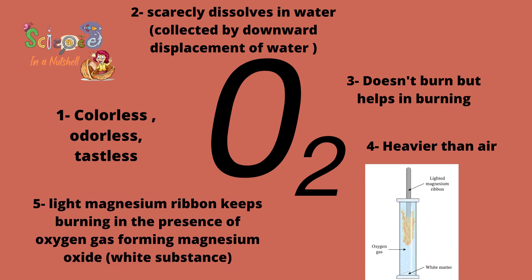Number 5: if we get a lighted magnesium ribbon and expose it to oxygen, it will keep burning, and a white substance will appear. This white substance is Magnesium Oxide.